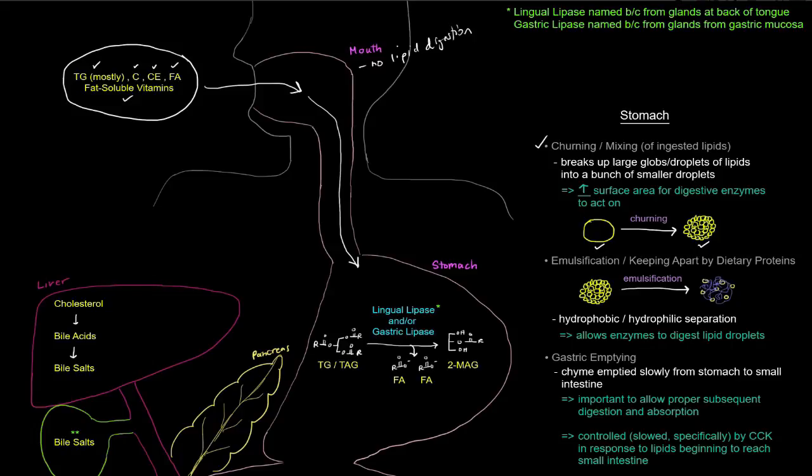And the mixing and moving around of the stomach is going to make that into a bunch of smaller droplets. And that's important because it increases the surface area for digestive enzymes to act on. And so it makes it easier for things like lingual lipase and gastric lipase in the stomach to go through and digest triglycerides into fatty acids and to monoacylglycerol. So what's happening here is that these triglycerides are having the acyl groups on carbons 1 and 2 of the glycerol backbone being removed as free fatty acids.